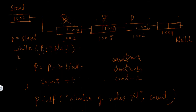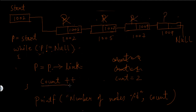Now again this while condition will be checked. This time also p is not equal to null, so the condition is true and this statement will get executed. p->link means the link part of this node, which is the address of the next node, so the address of the next node will be assigned to p, and p now means this node. This statement will again increment the value of count by 1, so count will become 2 plus 1 equals 3.